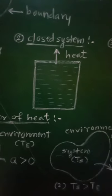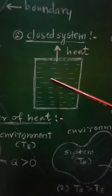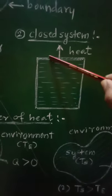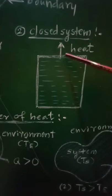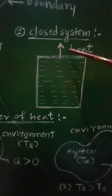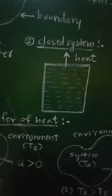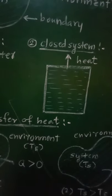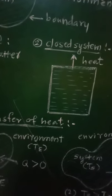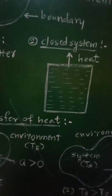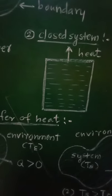In the case of a closed system, water again represents the system, but now a lid is kept on the kettle, making it a closed system. In this case, only heat energy is exchanged from the system to its environment. A closed system does not allow exchange of matter but allows energy, that is heat, to be transferred.